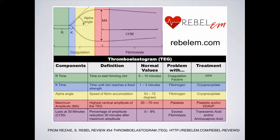The first thing you read off a TEG is the R time — the time from when you have the initial insult to when your body recognizes it and triggers clot formation globally. The longer that is, the more FFP you have to give. Prolonged R times are met with FFPs, unless there is anticoagulation on board, in which case they'll be met by a targeted reversal agent based on guidelines, consensus, or your in-house hospital protocol.